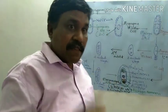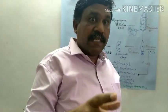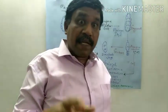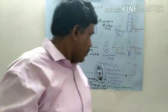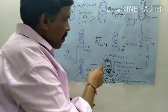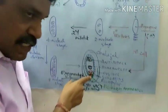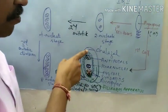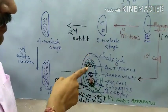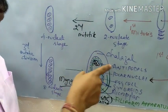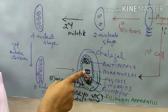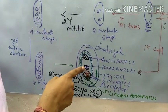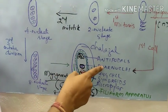Just like in anther pollen sacs where tapetum supports the microsporogenous cells, these cells are arranged such that towards the chalazal end 3 cells are there — those are called antipodals. In the center we have the 2 cells of the polar nuclei.